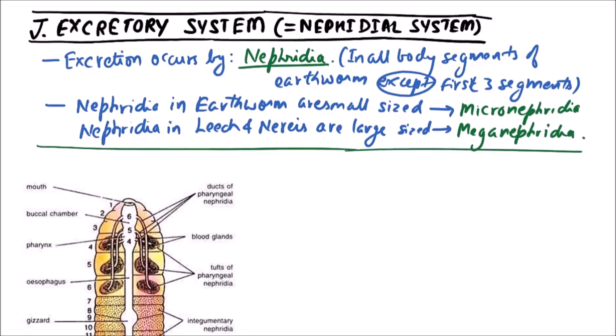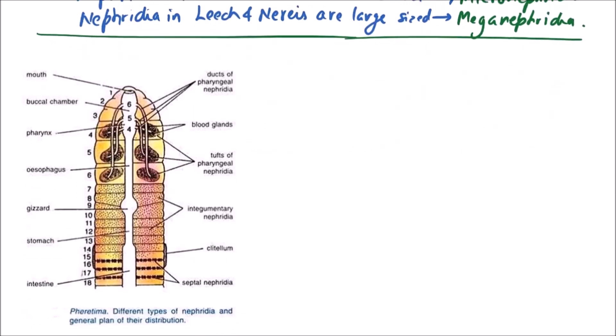Now the types of nephridia. There are mainly three types of nephridia: pharyngeal nephridia, integumentary nephridia and septal nephridia. So three types of nephridia are found in earthworm.